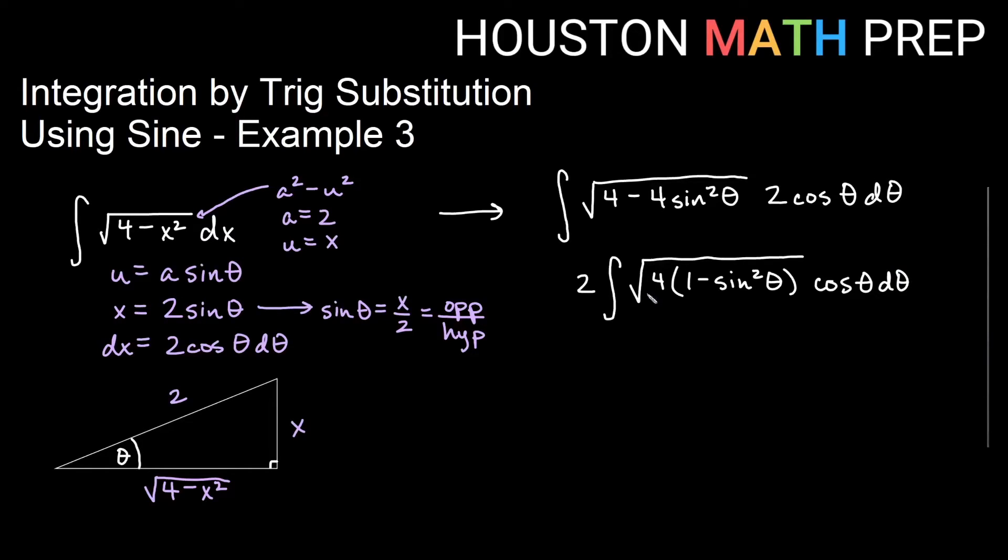So factoring out now the square root of 4 would be a 2. So we have another 2 that comes out. So we get a 4 on the outside. And we get the square root of 1 minus sine squared theta. This Pythagorean identity we will want to think of as cosine squared theta.